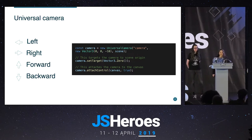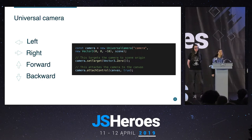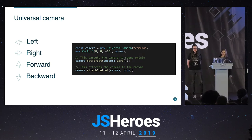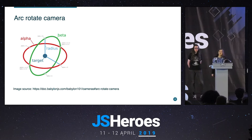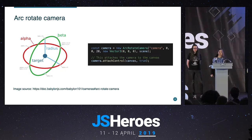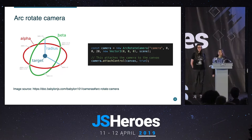There are more cameras depending on your use case. For example, there's the ArcRotationCamera, which always looks at the same point in the scene but rotates around it. In code, we use the ArcRotationCamera class, give it a name, define its alpha and beta angles, set how far from the center it should stand, add it to the scene, and also attach it to controls.